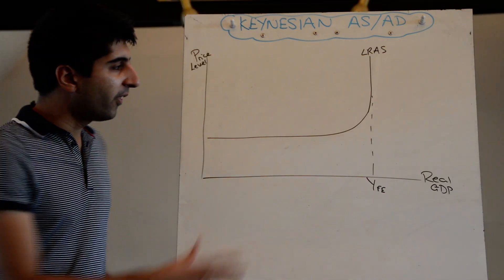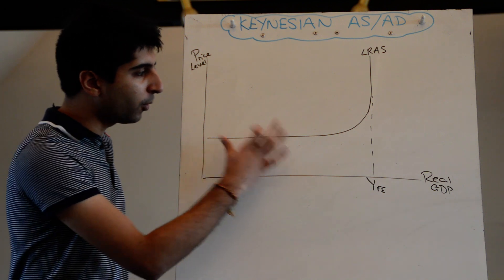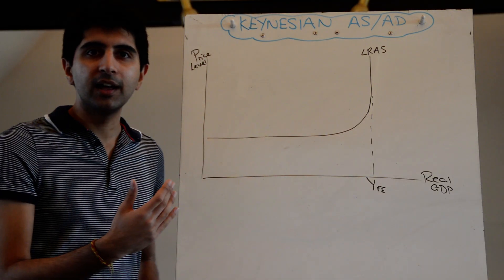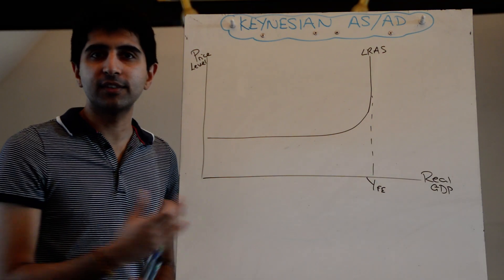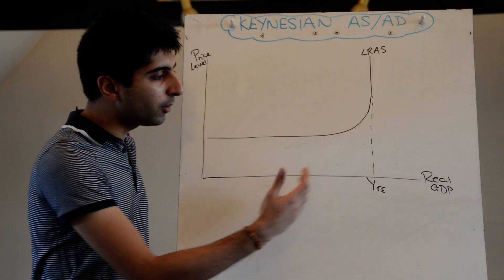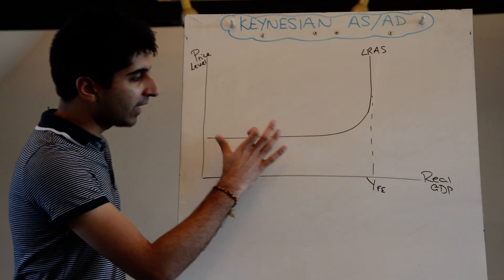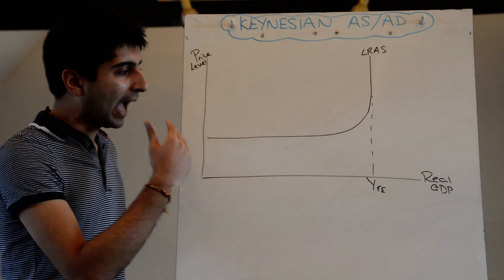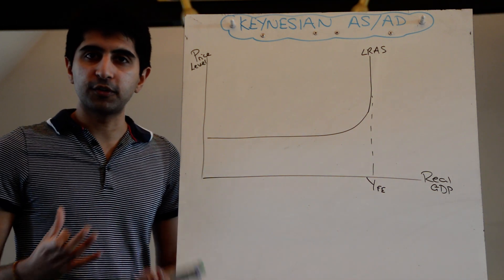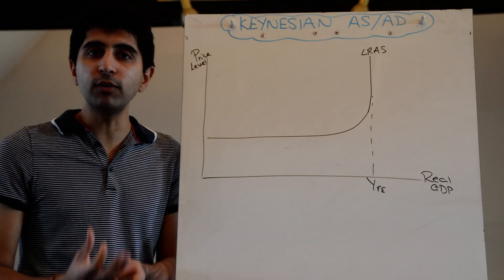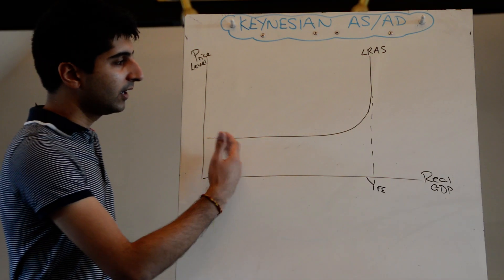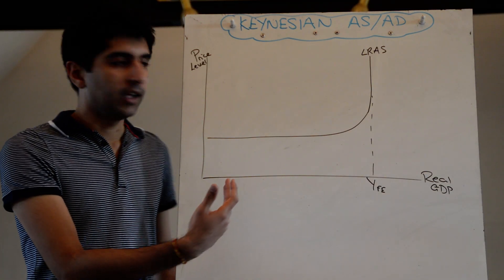There are times where the aggregate supply curve can be horizontal, which represents a point where there's so much spare capacity, like in a recession, where the economy can be stuck way below full employment. He argues that when there's lots of spare capacity, output can increase without any inflationary pressure at all. This is because during periods of spare capacity, when output increases there isn't much pressure on resources or factors of production, so their prices don't have to rise.